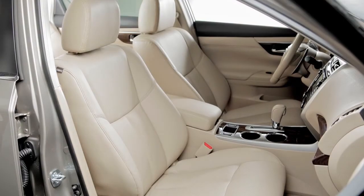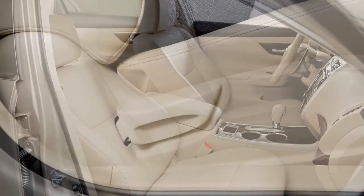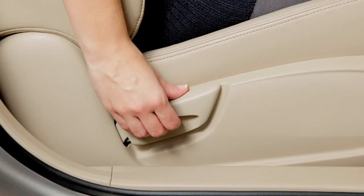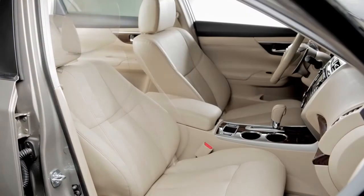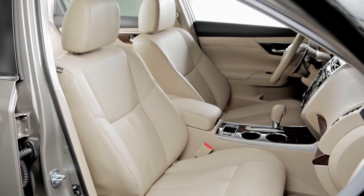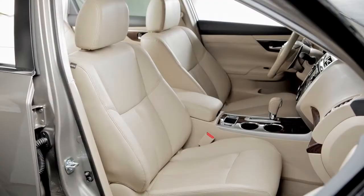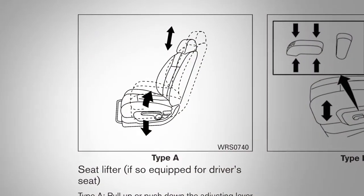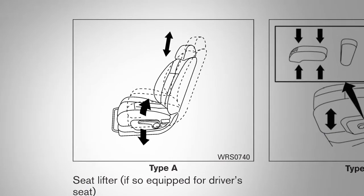To recline the front seatbacks manually, locate this lever on the outside of the seat base. Pull up and lean back. To bring the seat back upright, pull the lever and lean forward. If your vehicle is equipped with a manual seat lifter,